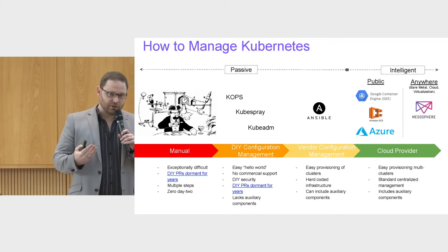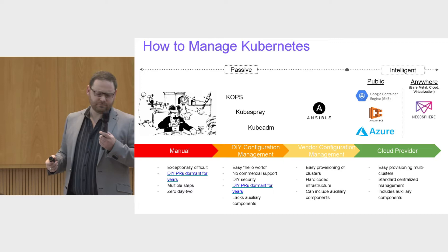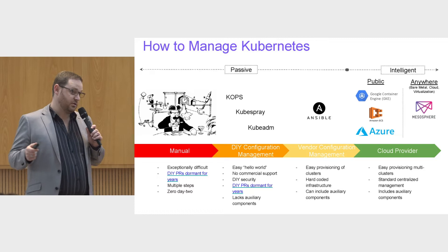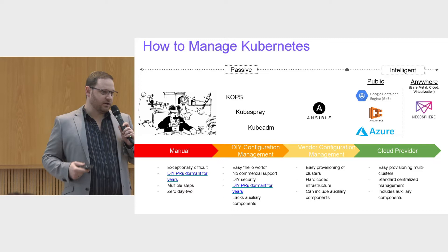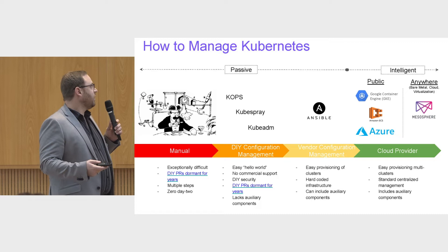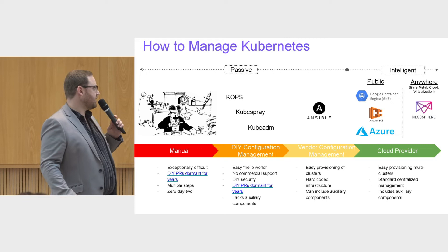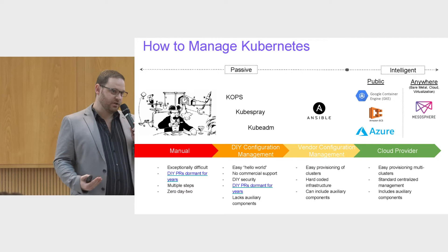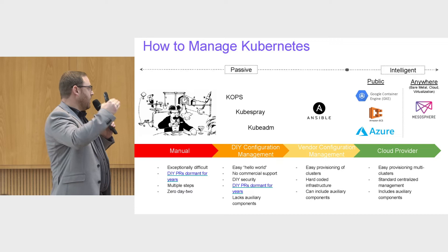In development, doing it yourself might be okay, but when moving applications toward production, it's not tolerable. You can do DIY configuration management with tools like KOPS or KubeSpray — a little easier to get started — however, you still have to deal with security yourself. Those tools don't automate security, you still have the issue with pull requests that can sit dormant for years, and you don't get all the auxiliary CI/CD and automation components. Many organizations have taken to using vendor configuration management — we have our friends at HashiCorp here with Terraform, which we integrate with for Mesosphere DCOS deployment.